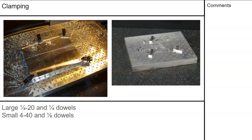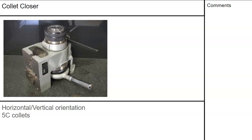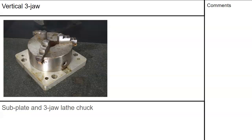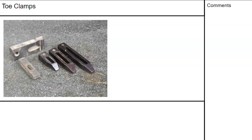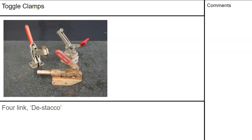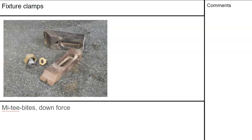You can make fixtures as small as 4-40 with eighth-inch dowel pins. We have a vertical collet closer that will hold round stock in a horizontal or vertical position. We also mount a three-jaw chuck vertically to hold round stock out of position. There are angle plates for 90 degrees, and different types of toe clamps — quarter-inch, three-eighths, and half-inch. Toggle clamps are four-link. Also, Destaco bought Mighty Bites — Mighty Bites are eccentric and downforce clamps that work pretty well, though they may leave marks or impressions in the stock.